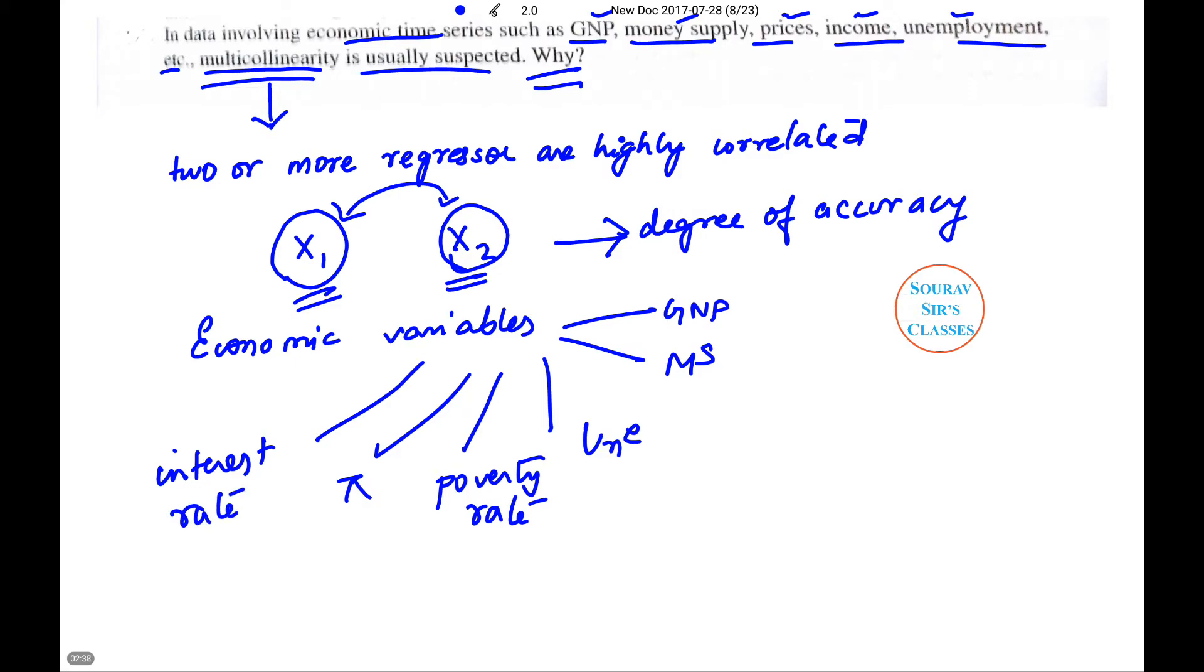Now consider a case where the economy is experiencing growth. So the GNP increases. A lot of money is earned by the country, so the money supply in the economy goes up.